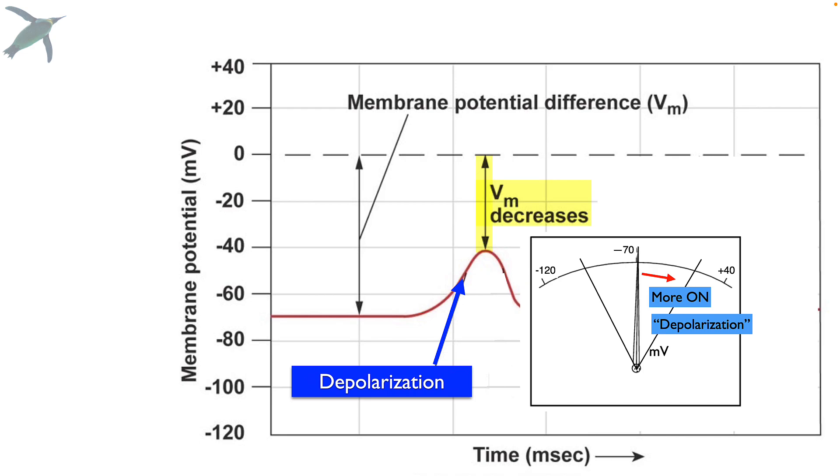So, there are two options. This distance can either decrease or increase. When we see the voltage moving in this direction so that Vm decreases, that's what we call depolarization. We're making the inside of the membrane less negative than it is at rest. And that moves the membrane towards on.